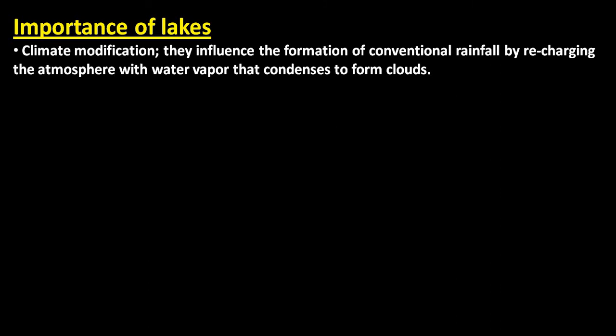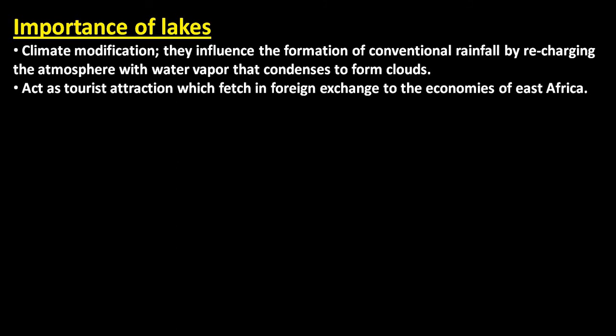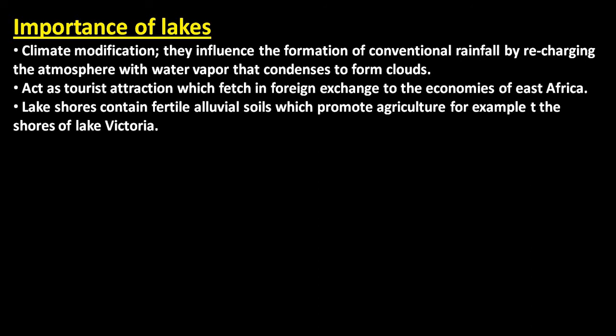Now we look at the importance of lakes. First, they modify the climate through the formation of convectional rainfall by recharging the atmosphere with water vapor that condenses to form cumulonimbus clouds, hence forming convectional rainfall. Next, they act as tourist attractions, allowing tourism — people go to the beaches of lakes as tourist attractions. Also, lake shores contain fertile alluvial soils which promote agriculture — for example at the shores of Lake Victoria these alluvial soils are fertile and promote agriculture.